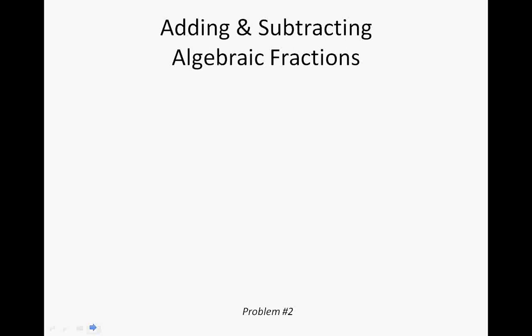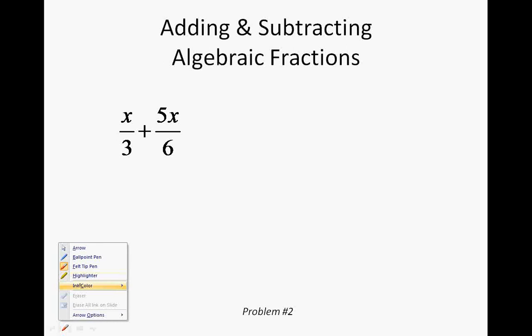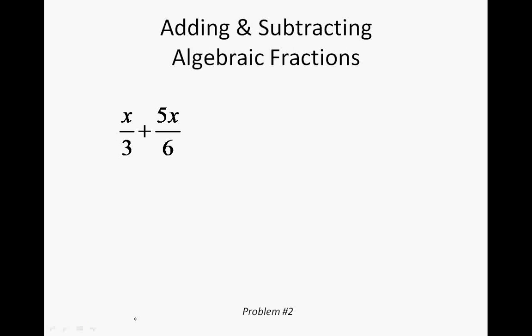That was an easy review — now let's move on to adding and subtracting algebraic fractions. The only difference is that we're putting variables in our numbers, but don't let the variables throw you because they act just like regular numbers. The problem is x over three plus five x over six. What is the least common denominator? The least common multiple of three and six is six.